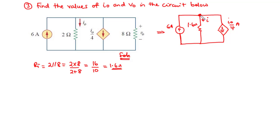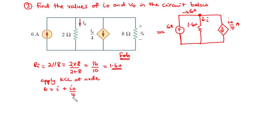Applying KCL at this node, we have 6 amperes entering the node, and that is equal to current leaving: I plus I0 over 4. Therefore, applying KCL at the node, we have 6 equals I plus I0 over 4. Let's make I the subject by transposing I0 over 4 to the left-hand side. Since I0 over 4 is the same as 0.25 I0, we get 6 minus 0.25 I0 equals I. Let's call this equation 1.